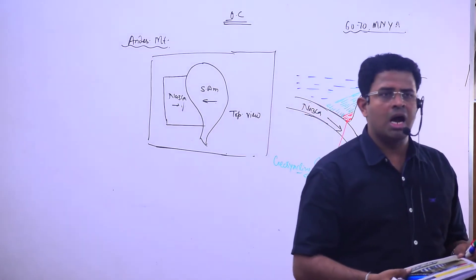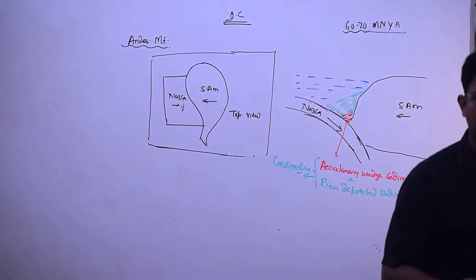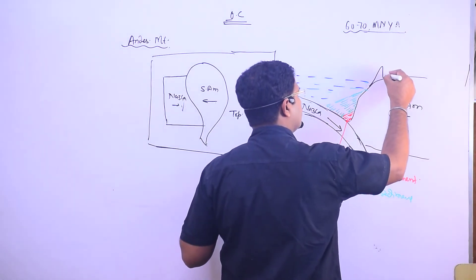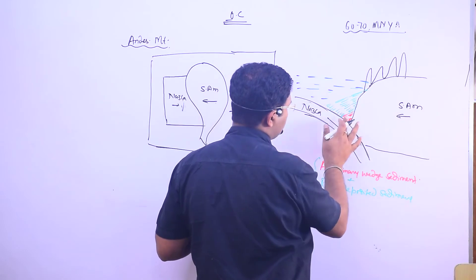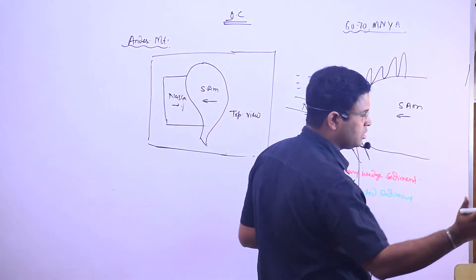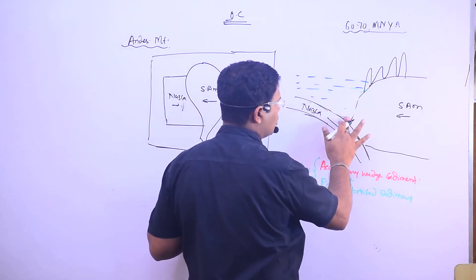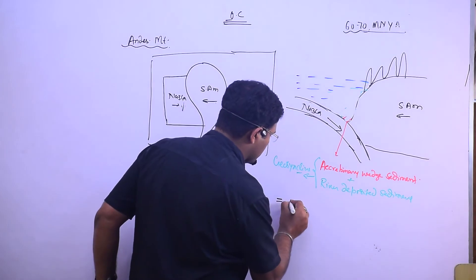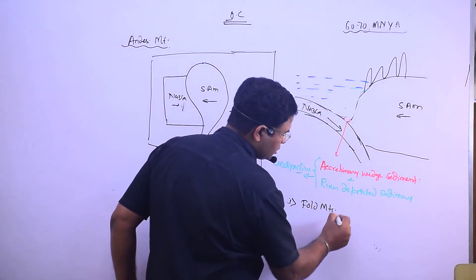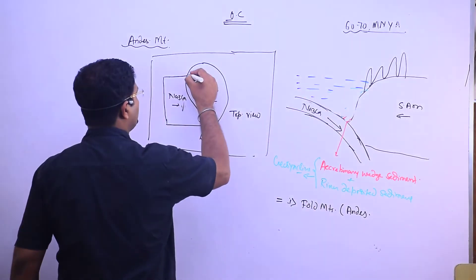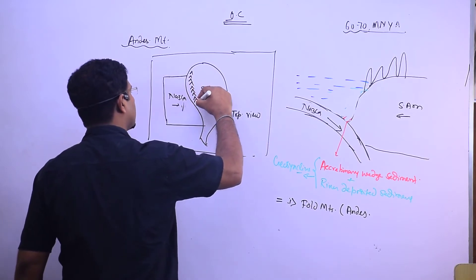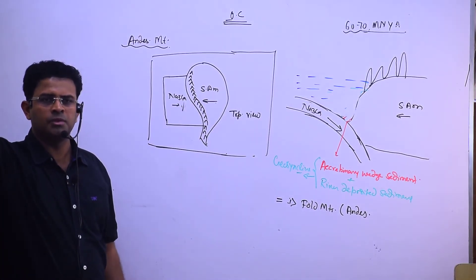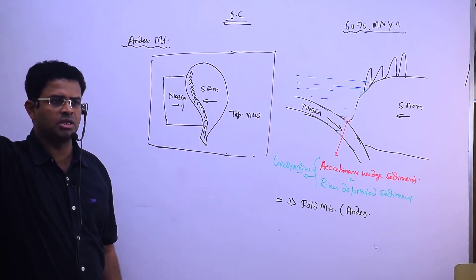Under the compressional force applied by the converging Nazca plate and South American plate — where the Nazca plate is subducting below the South American plate — the deposited sediment in the geosyncline starts folding and coming upward. Hard rock cannot fold, but softer sedimentary rock can. This is how all fold mountains of the world originated, forming the Andes mountain on the western coast of South America. This has been happening for the last 60 to 70 million years.